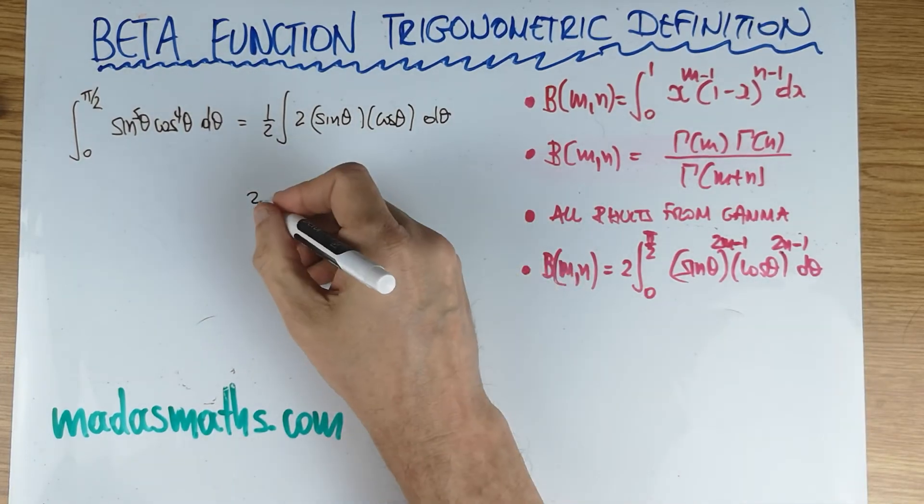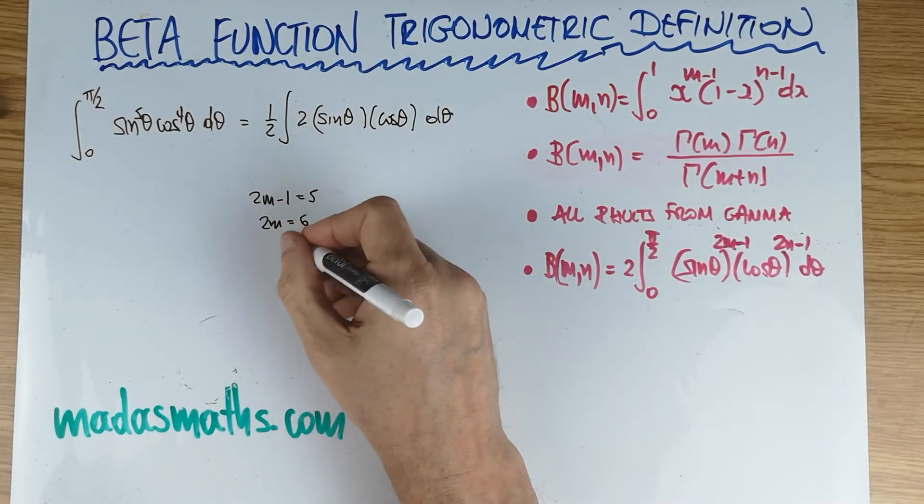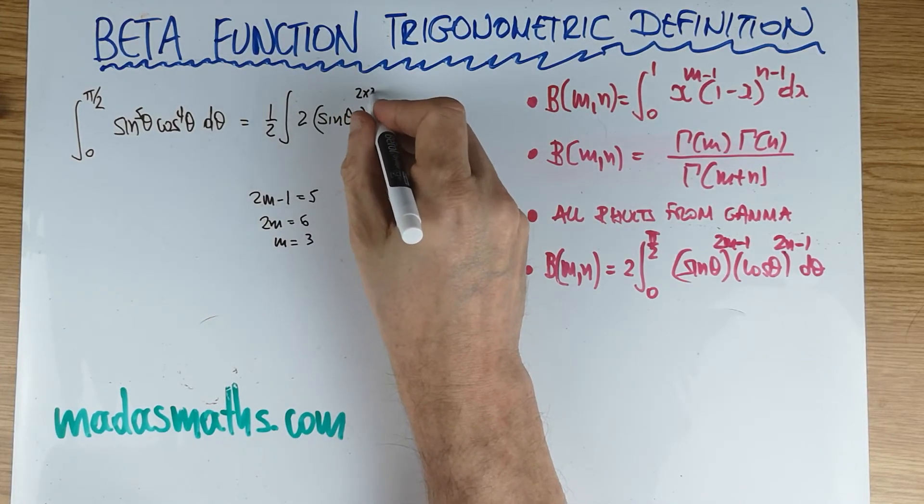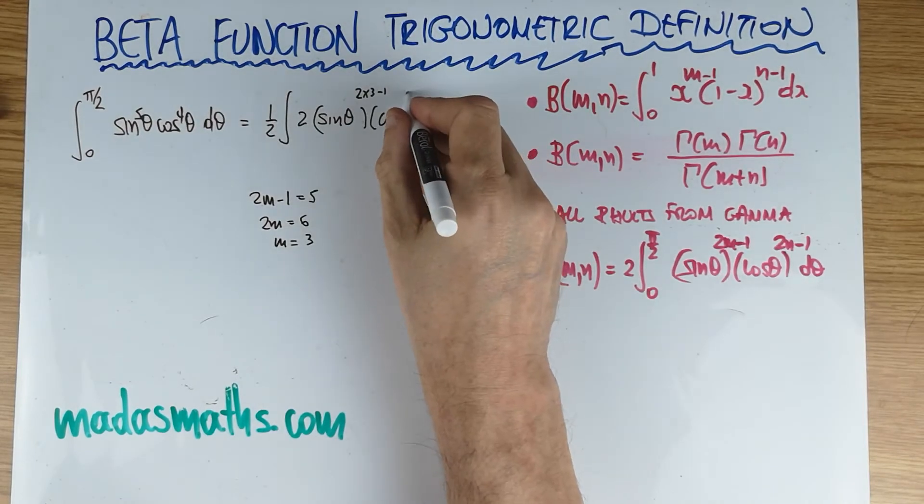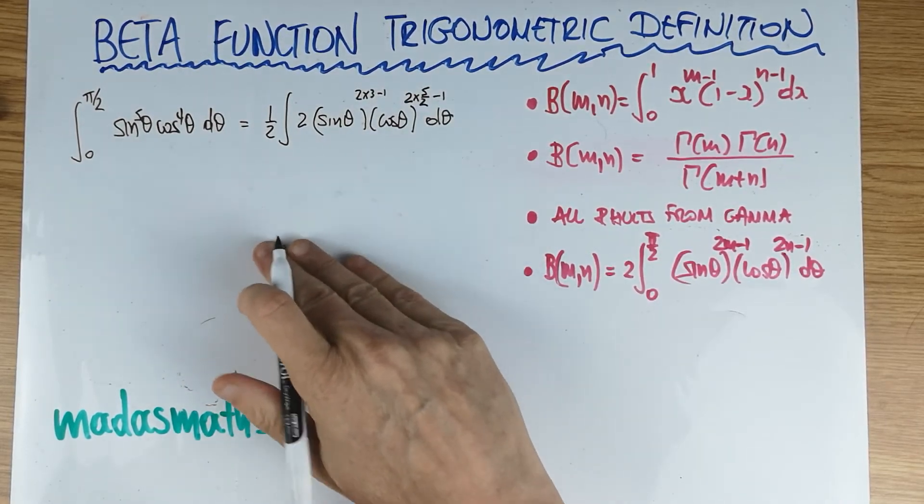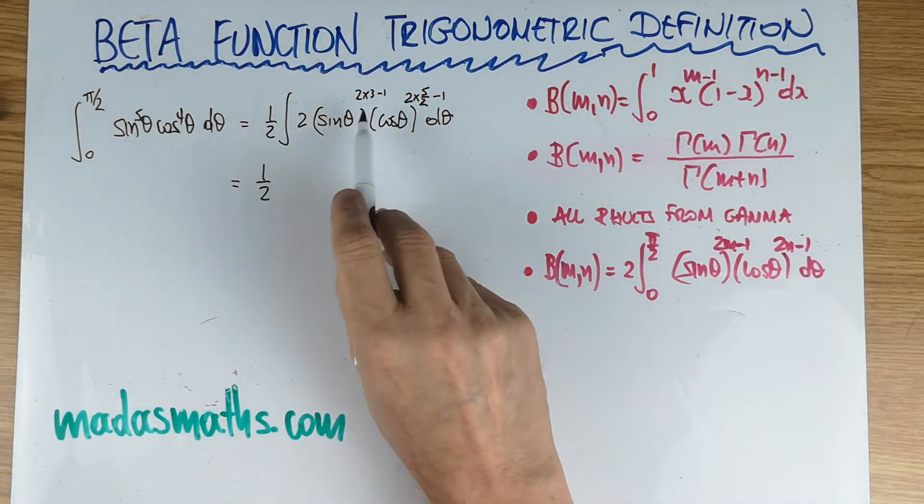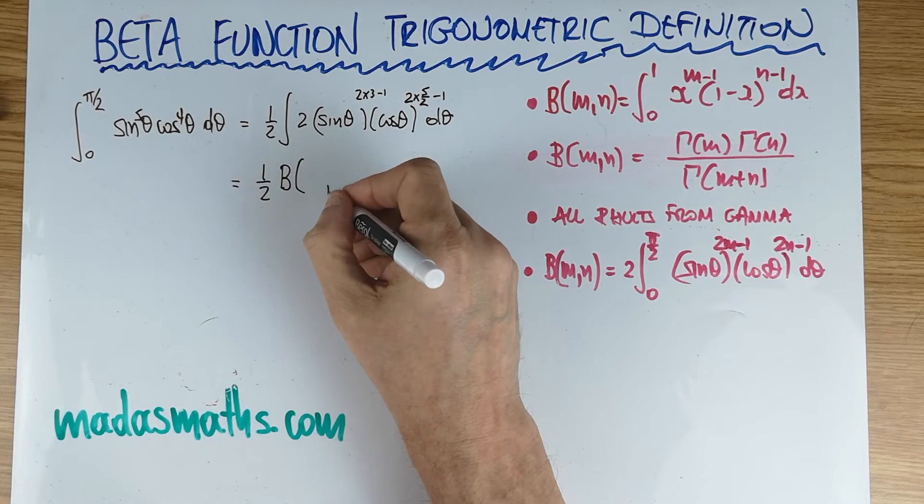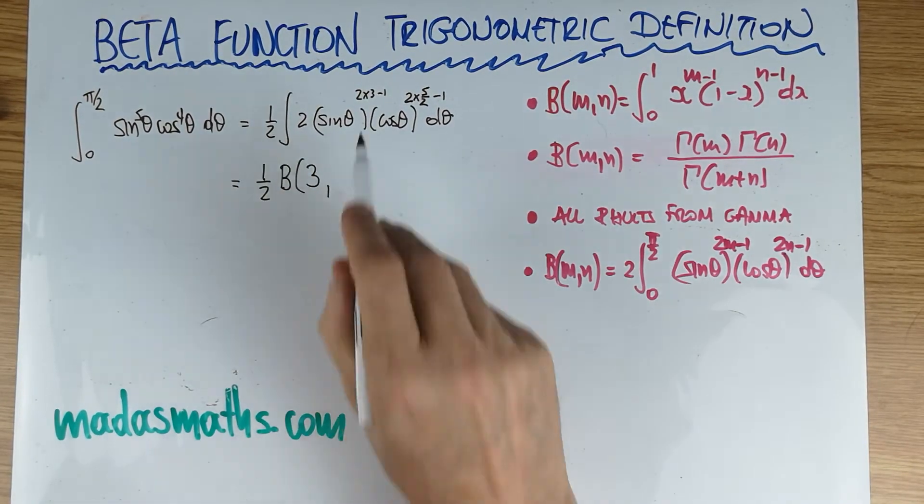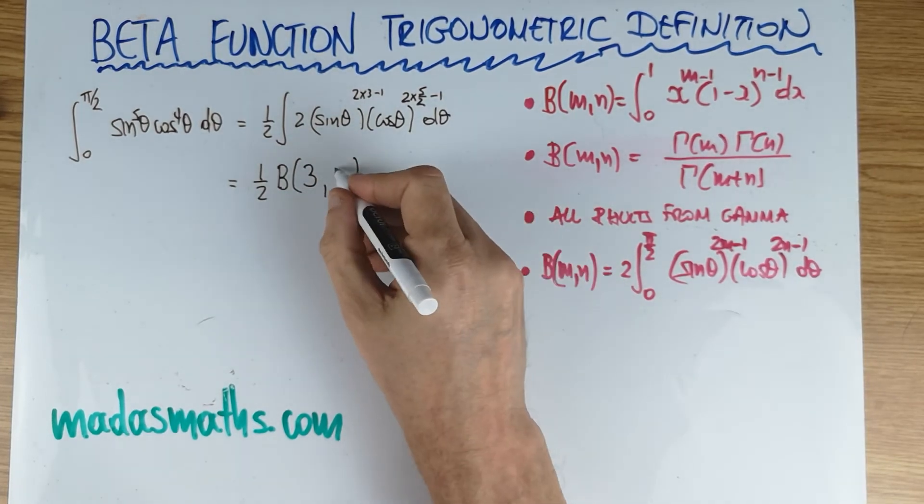What are the powers of this thing? If you look at 2m minus 1, you should be able to see by inspection, equals 5 in this particular case. So 2m must equal 6, so m equals 3. This is 2 times 3 minus 1. And the other one is 2 times 5 over 2 minus 1. So this is a half.